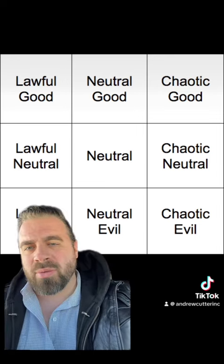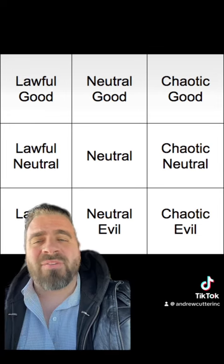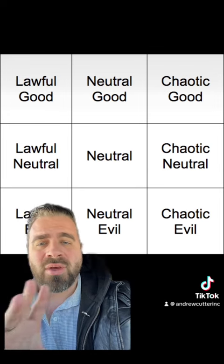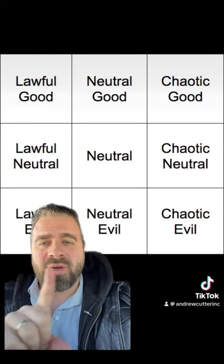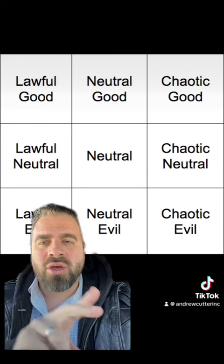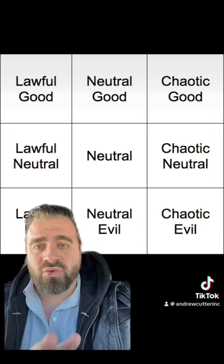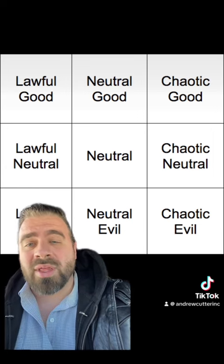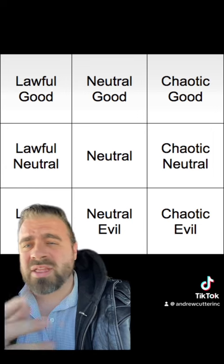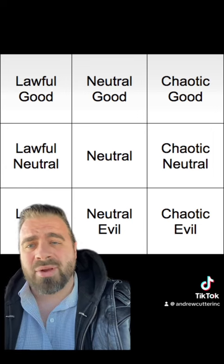These alignments are determined between a combination of five factors: lawful, chaotic, good, evil, and neutral. So with that said, let's just get right down to it.